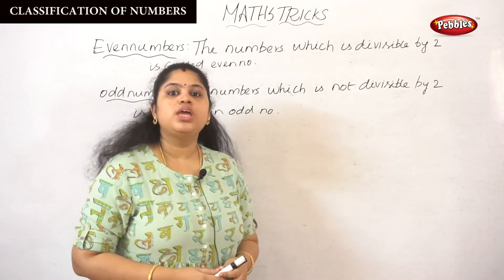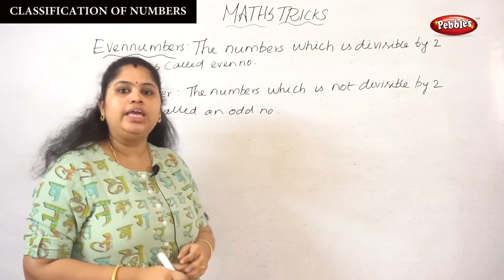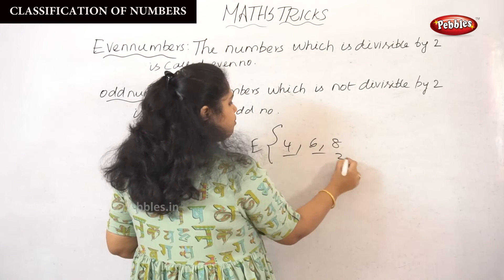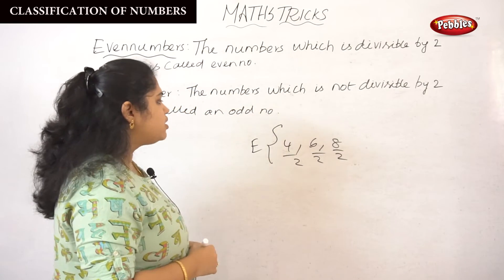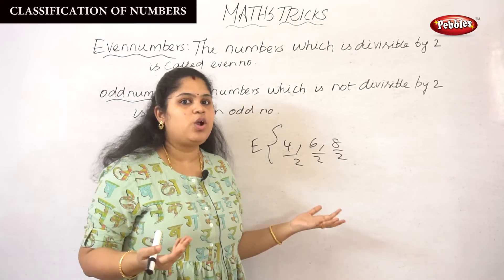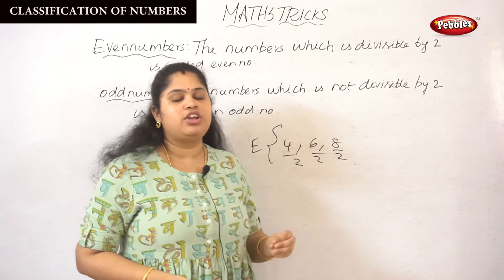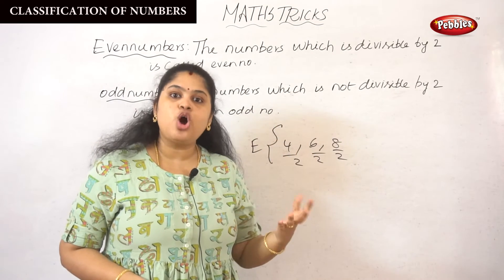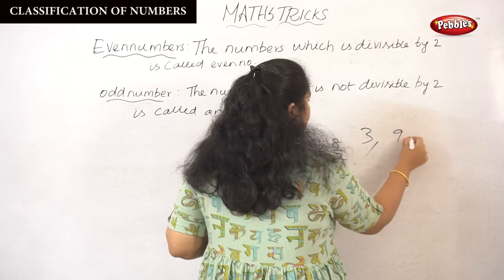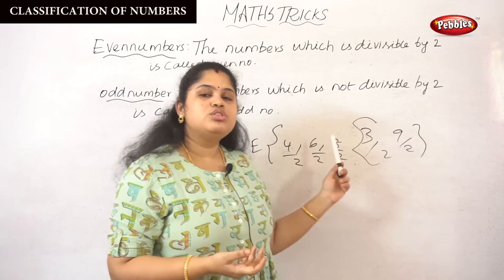Next, even numbers. Even numbers means the number which is divisible by 2 is called an even number. For example, 4, 6, 8 — every one of these is divisible by 2, so these are called even numbers. Next, odd number. Odd number is exactly opposite to the even number — a number which is not divisible by 2 is called an odd number. For example, 3 and 9 cannot be divided evenly by 2, so these are odd numbers.